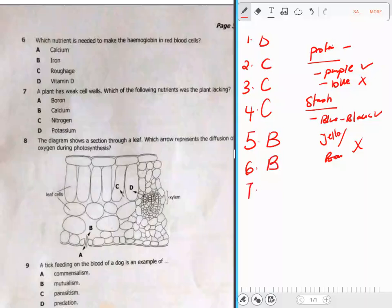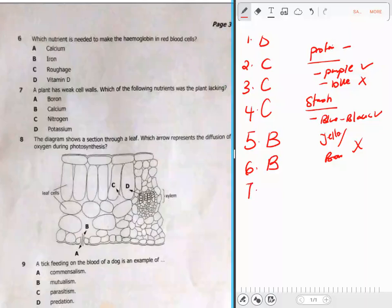Question 7: A plant has weak cell walls. Which of the following nutrients was the plant lacking? When a plant has weak cell walls, that plant is lacking calcium. Because calcium is responsible for making strong roots, strong walls, and so on.